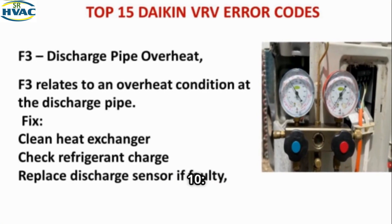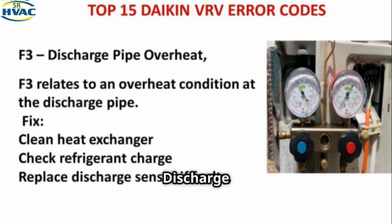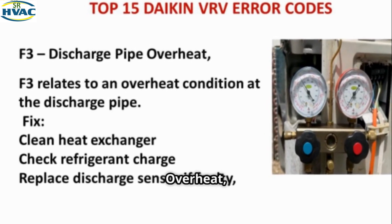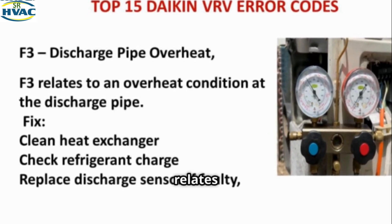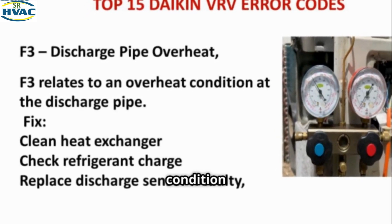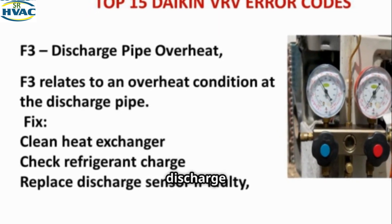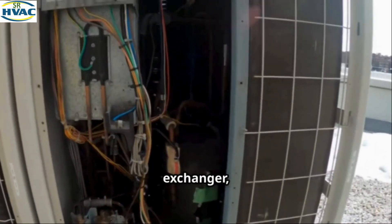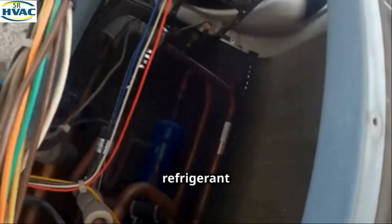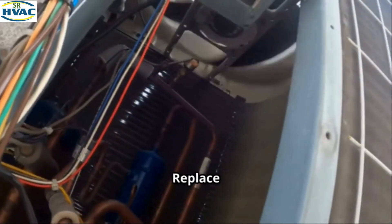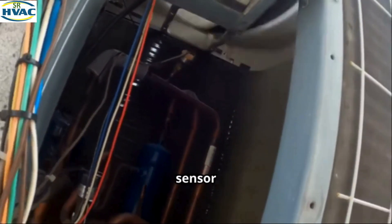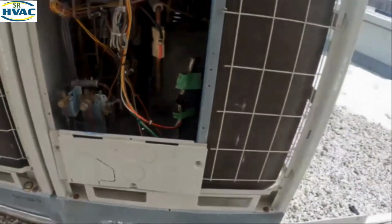Chapter 10 — F3: Discharge Pipe Overheat. F3 relates to an overheat condition at the discharge pipe. Fix: Clean the heat exchanger, check refrigerant charge, and replace the discharge sensor if faulty.